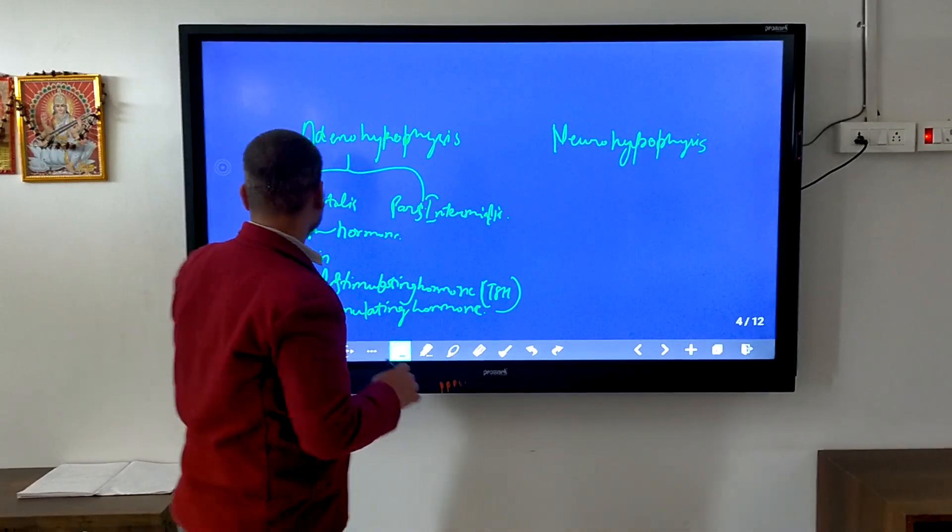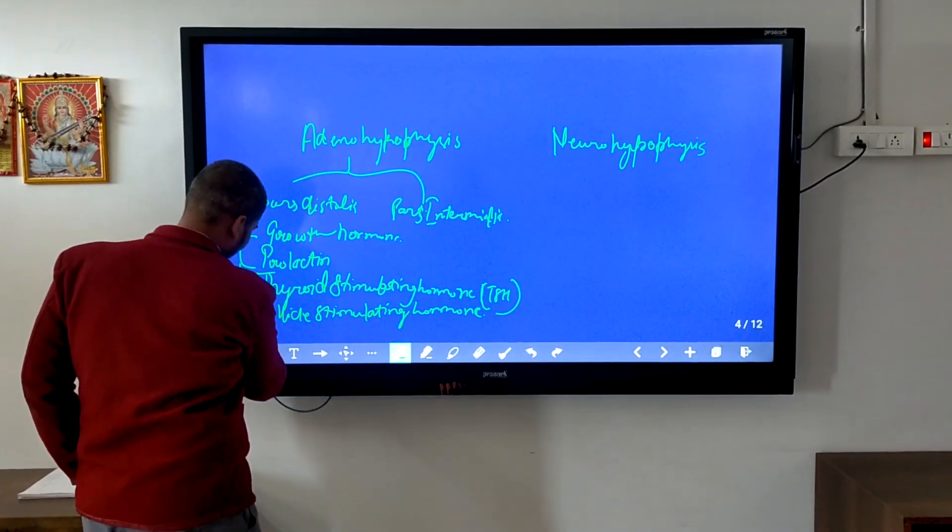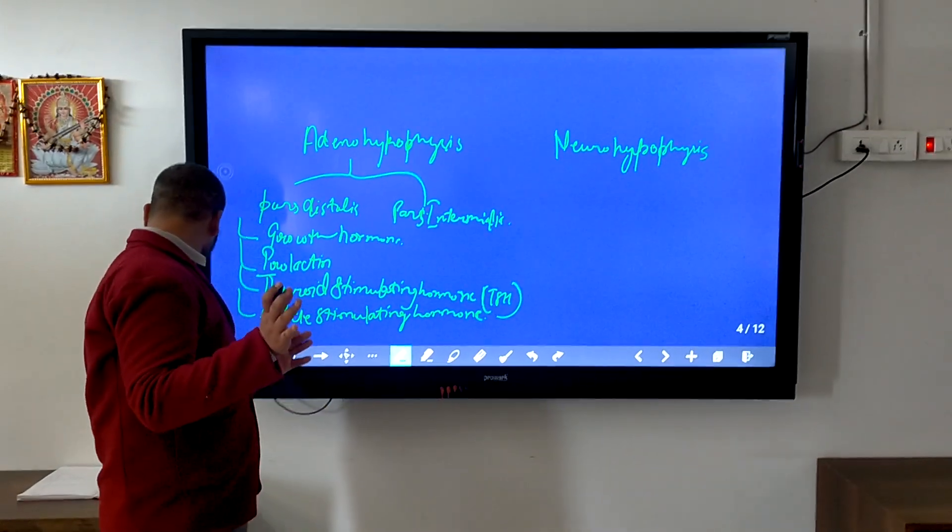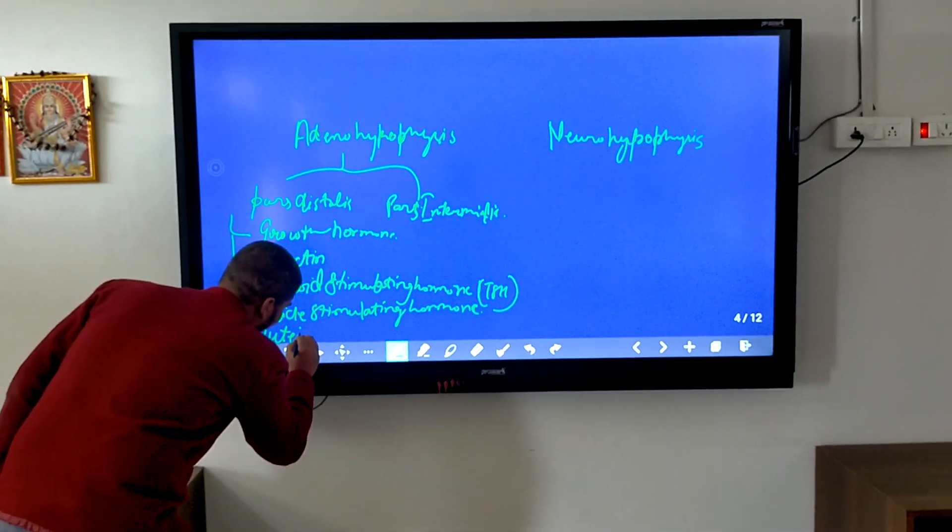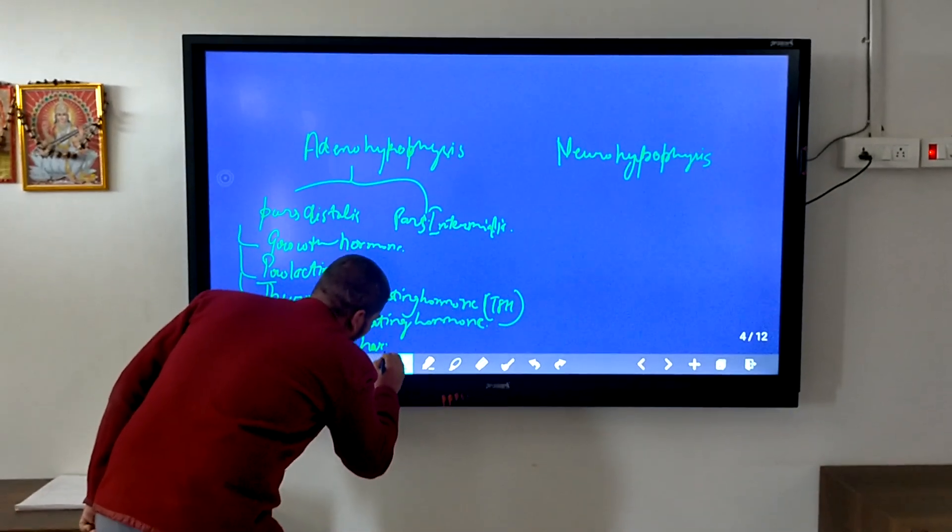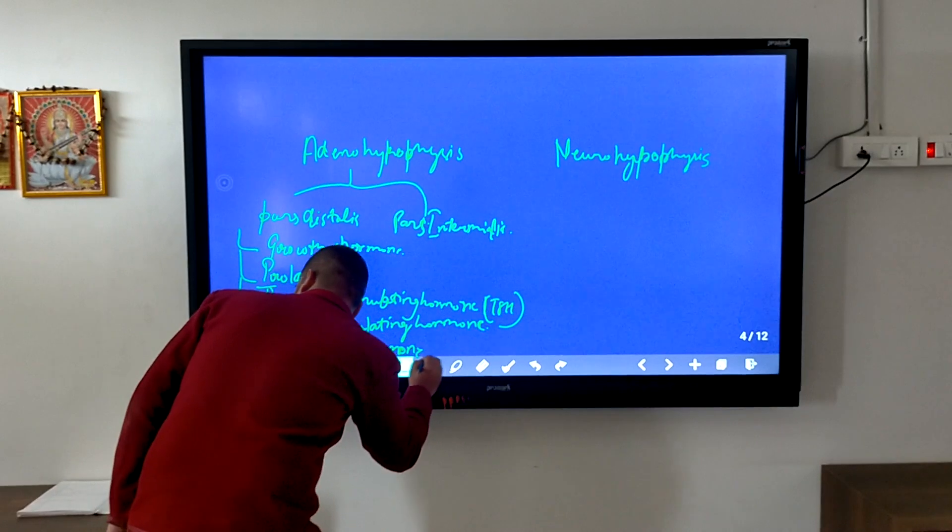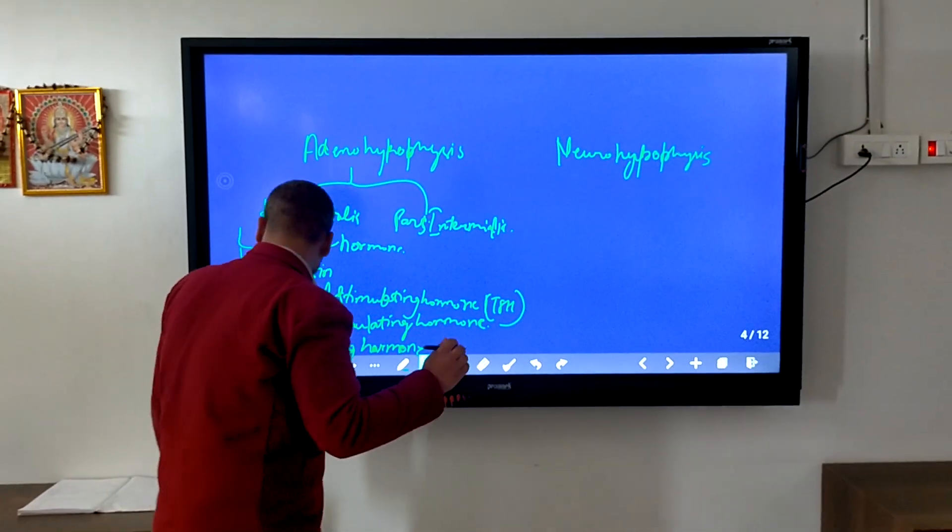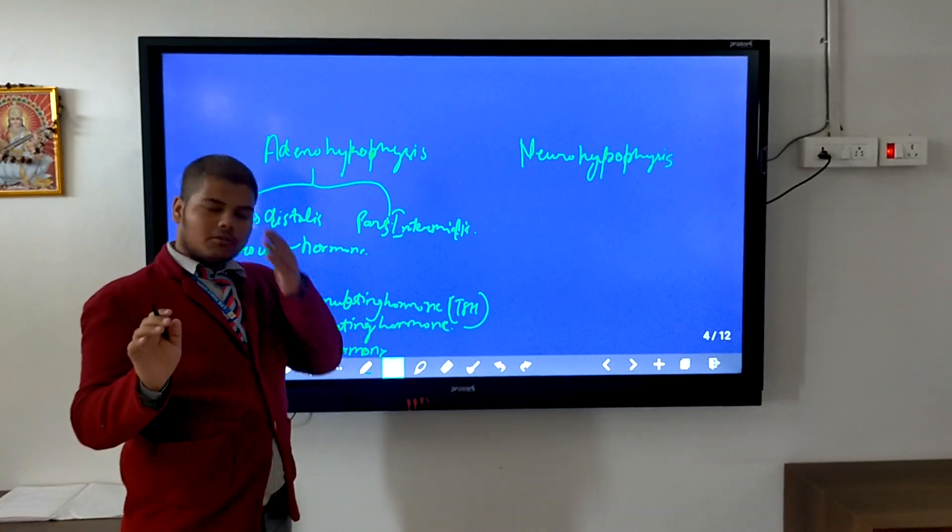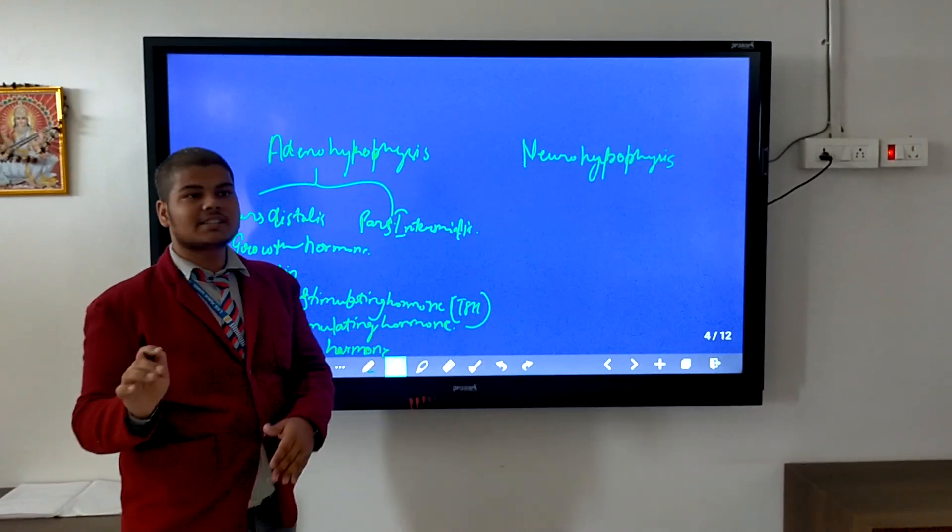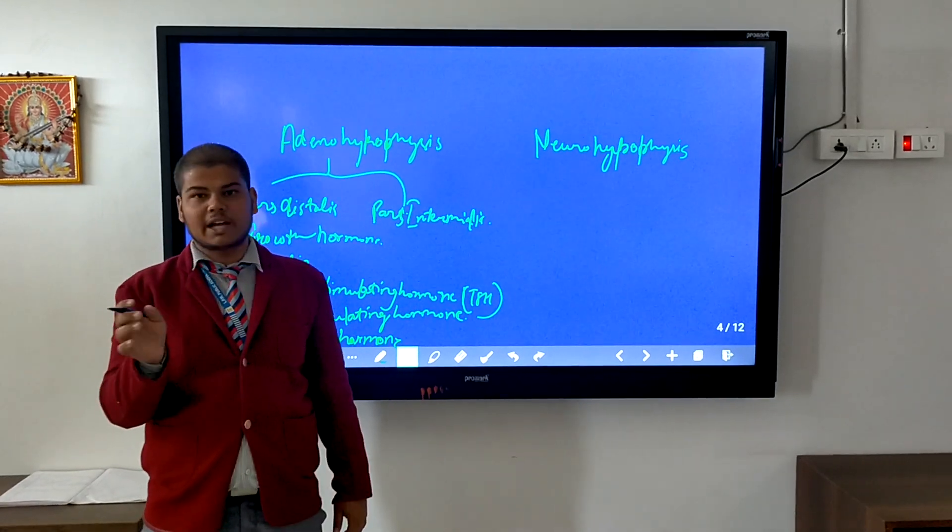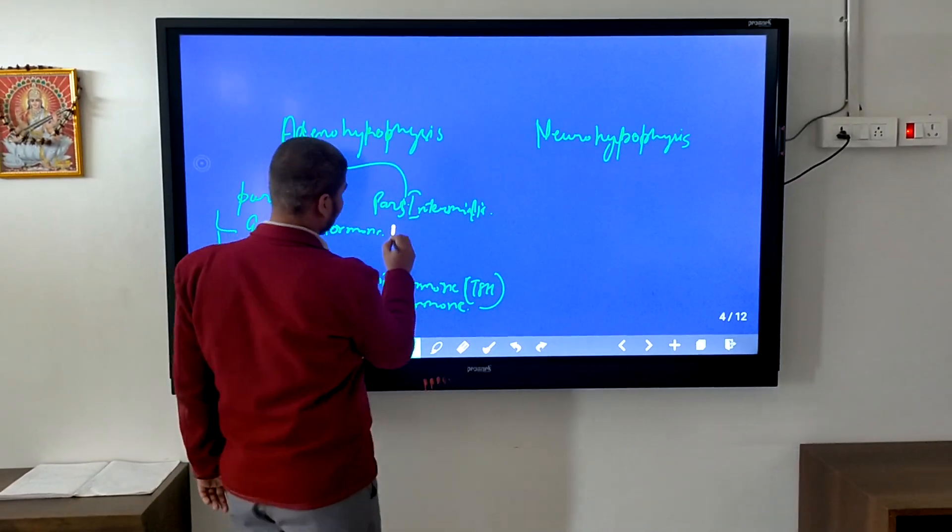Now pars intermedia secretes only one hormone, which is called melanocyte stimulating hormone.